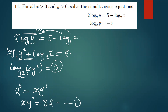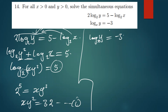The other equation is gotten from the second equation, which is log y base x being equal to negative 3. We convert this to exponential as well: the base x remains the base, the power is negative 3, and it's equal to y.